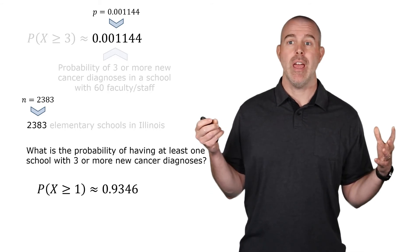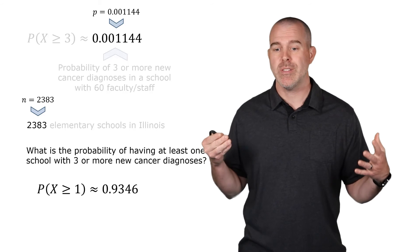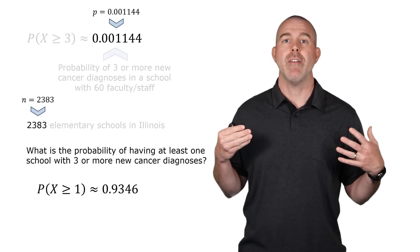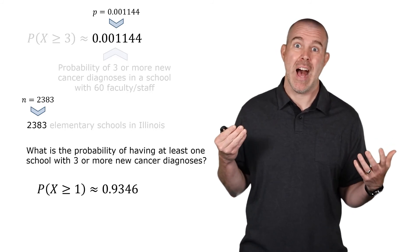So, in Illinois, in any given year, the probability of an elementary school with 60 staff members having three getting diagnosed with cancer in one year is actually fairly high.